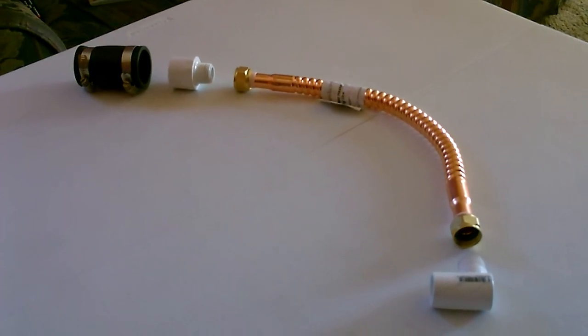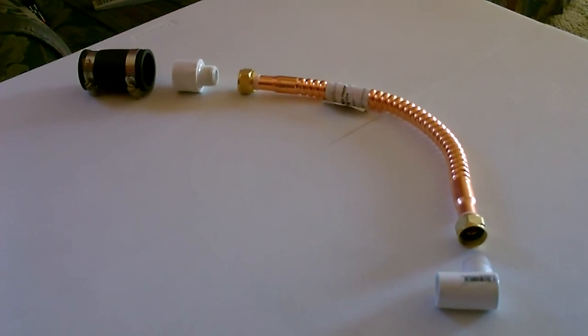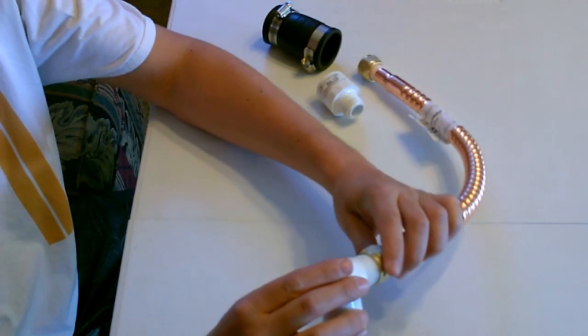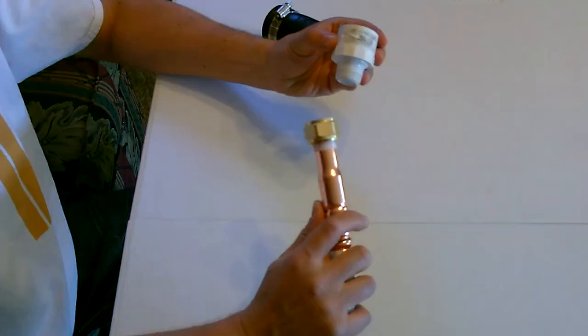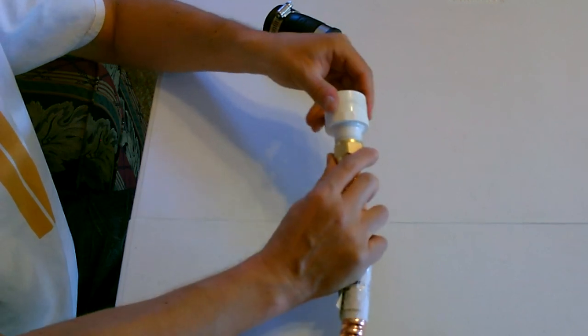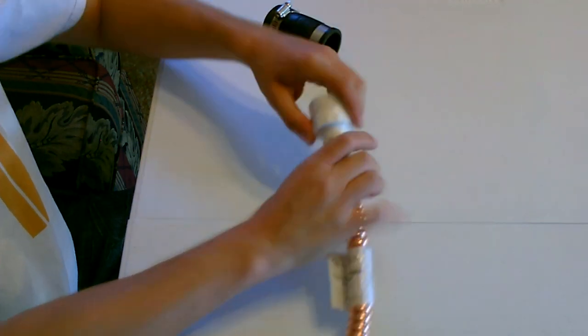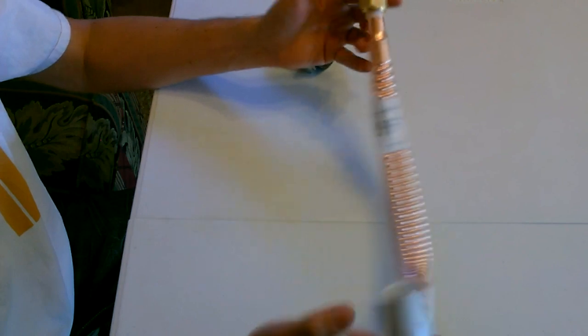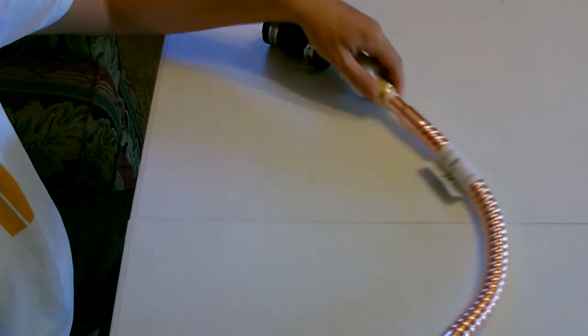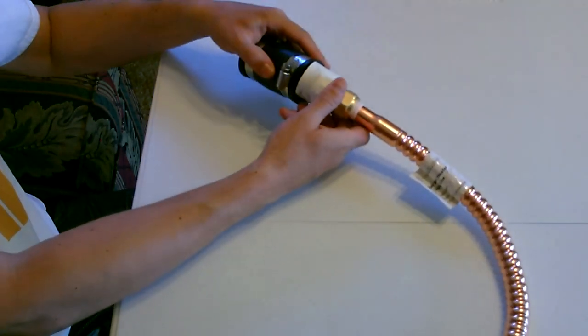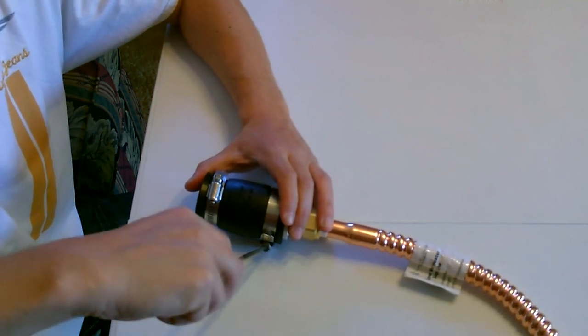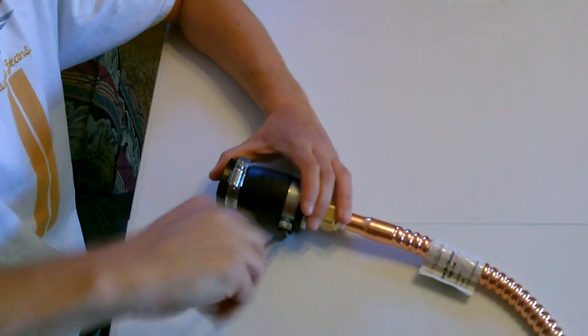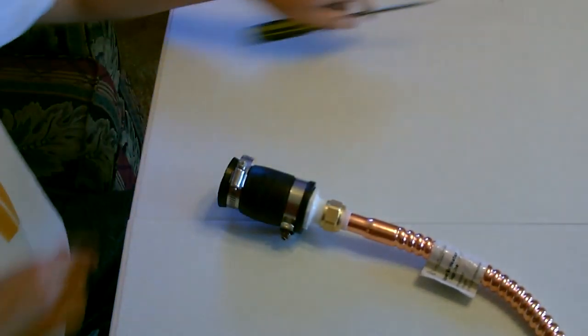All right, and here's a quick shot of how it all goes together. Notice I'm not using any Teflon tape or plumber's putty - you don't need any, doesn't leak. Just screw it together, and lastly just put on the coupler and tighten it up really good. That's it.